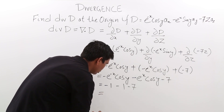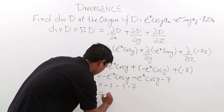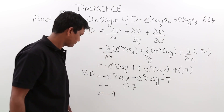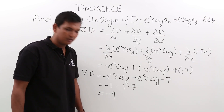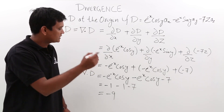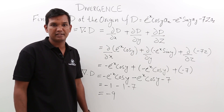So this comes out to be minus 1 minus 1 minus 7, which equals minus 9. The divergence of this D field at the origin comes out to be minus 9.